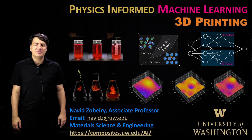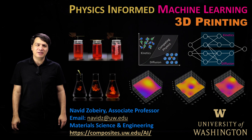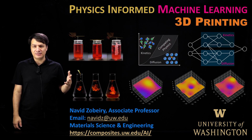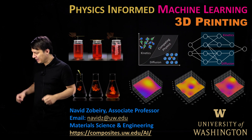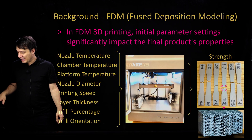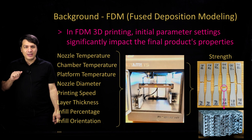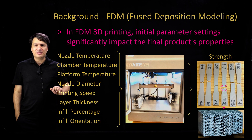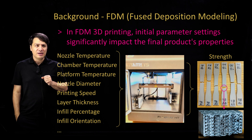We are continuing our lectures on physics-informed machine learning. In this case, we're going to look at another application and other techniques of physics-informed machine learning. The application is on 3D printing, and we are trying to understand what parameters affect the quality of the 3D printed part.